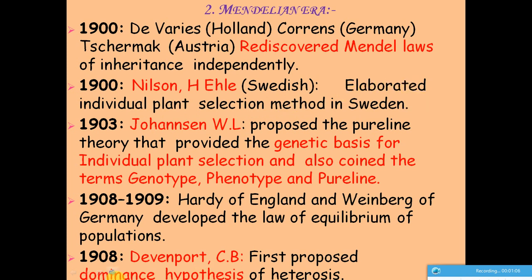In 1903, W.L. Johannsen, a famous scientist, proposed the pure-line theory. He provided the genetic basis for individual plant selection through this pure-line theory, explaining how genetically uniform lines could be derived from self-pollinating populations.